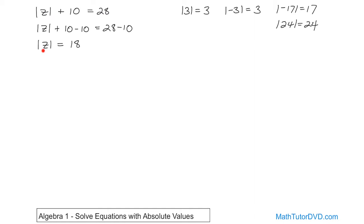When you have an absolute value, there are really two values that will work for z. Z can be 18, but z can also be negative 18. Make sure you understand that — these are the answers you would circle on your paper. If you stick 18 in here, the absolute value of 18 is 18. And the absolute value of negative 18 is also positive 18. So there are two values that work for z. When your variable is wrapped up in an absolute value, you're always going to get two answers — one positive and one negative — because the absolute value strips away the sign.